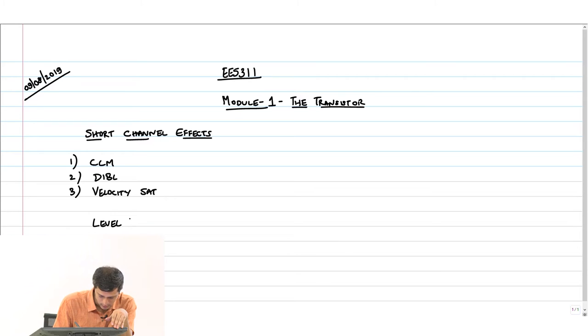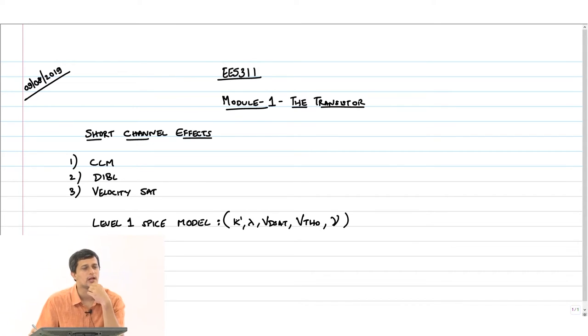The level 1 SPICE model is characterized by K prime, lambda, V D sat, V T H naught, and gamma. These 5 parameters uniquely characterize the transistor in a particular technology. In this class we will move to something very critical that has really plagued the VLSI industry because of scaling, and this is called subthreshold leakage.